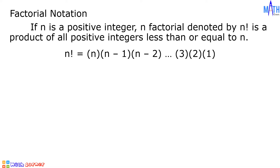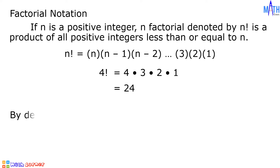For instance, 4 factorial is equal to 4 times 3 times 2 times 1, which is equal to 24. As a special case, by definition, 0 factorial is equal to 1.